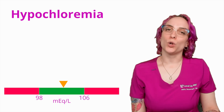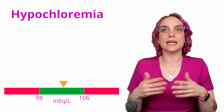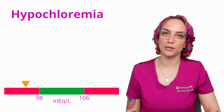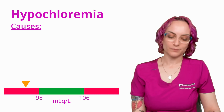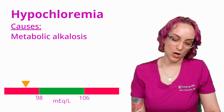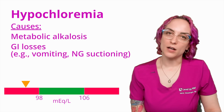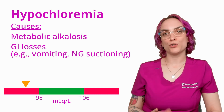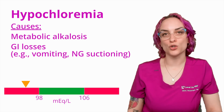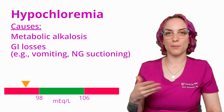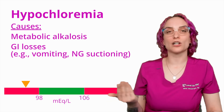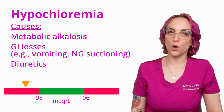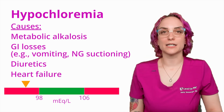Now, hypochloremia. Hypochloremia is the state of having too little chloride, so this is going to be less than 98 mEq/L. What are some possible causes here? Metabolic alkalosis is a possible cause, along with GI losses such as excessive vomiting or NG tube suctioning. Remember, chloride makes up a lot of those digestive juices, so if you're losing them either to vomiting or to suction, then you're losing chloride with them. Diuretics can also affect your electrolytes, and heart failure is another one that can affect it as well.